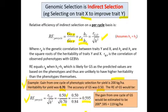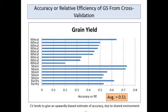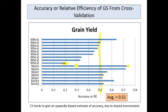Let's look at some relative efficiencies of genomic selection based on cross-validations, focusing on grain yield — a complex trait with generally low heritability — in wheat, maize, and barley. On average, the accuracy or relative efficiency of genomic selection is about 0.5, sometimes above 0.7, and in one case as low as 0.2. This suggests that one cycle of genomic selection gives you about half the gain you would get from one cycle of phenotypic selection for grain yield.